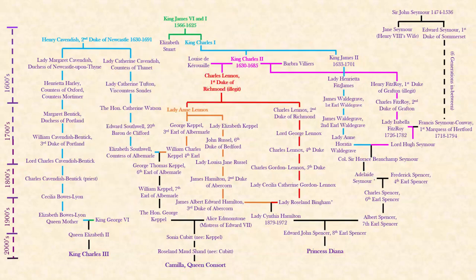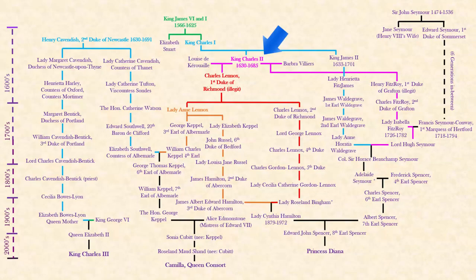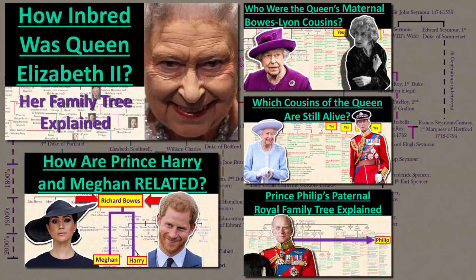The historical and genealogical significance of these several lines going back to James and Charles the Second is great — not only for Prince William, who someday will be the first king to descend from Charles the Second, but he will also be the first descendant of Charles the First to reign over Britain since 1714. There are probably more undiscovered connections through King James yet to be found between these three.